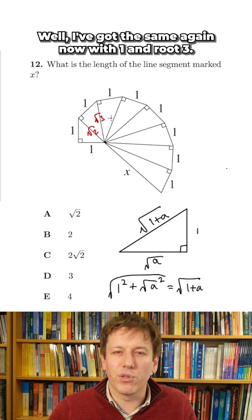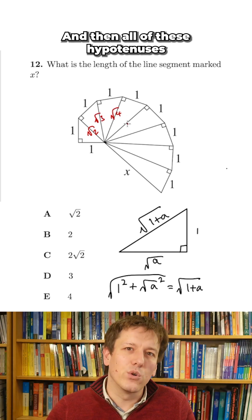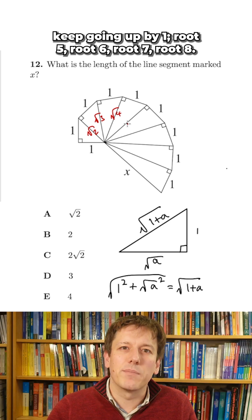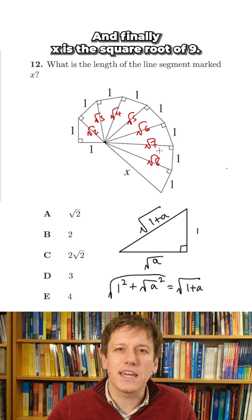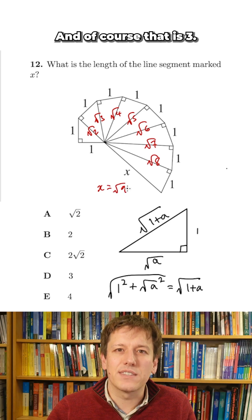I've got the same again now with 1 and root 3, so I get root 4. And then all of these hypotenuses keep going up by 1: root 5, root 6, root 7, root 8. And finally, x is the square root of 9, and of course that is 3.